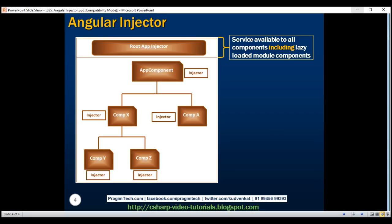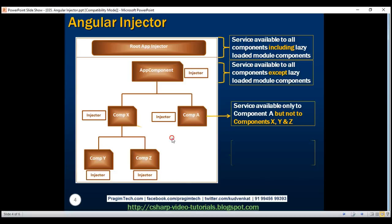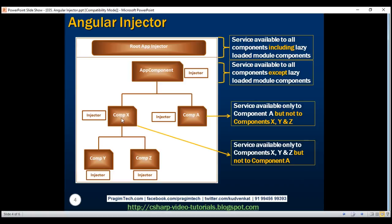If we register our service with the injector at the app component level — that is, at the root component level — then that service is available for injection to all components except lazy loaded module components. If we register our service with the injector at a specific component level, then that service is available for injection only to that component, but not for components x, y, and z. On the other hand, if we register our service with the injector at component x level, then that service is available for injection into component x, y, and z, but not component a.